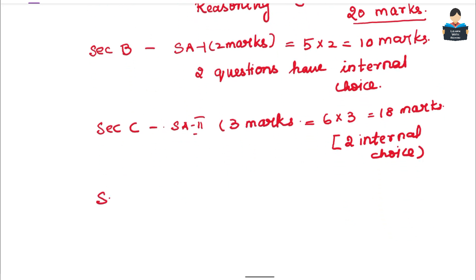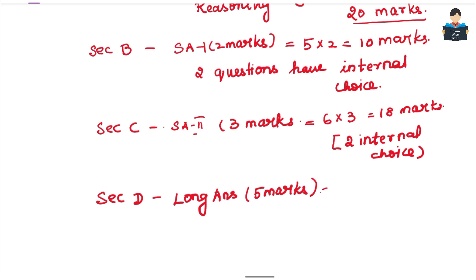Next is Section D — long answer questions. In Section D, there are four questions of 5 marks each. So there are four 5-mark questions, and in these 20 marks there are two internal choices.